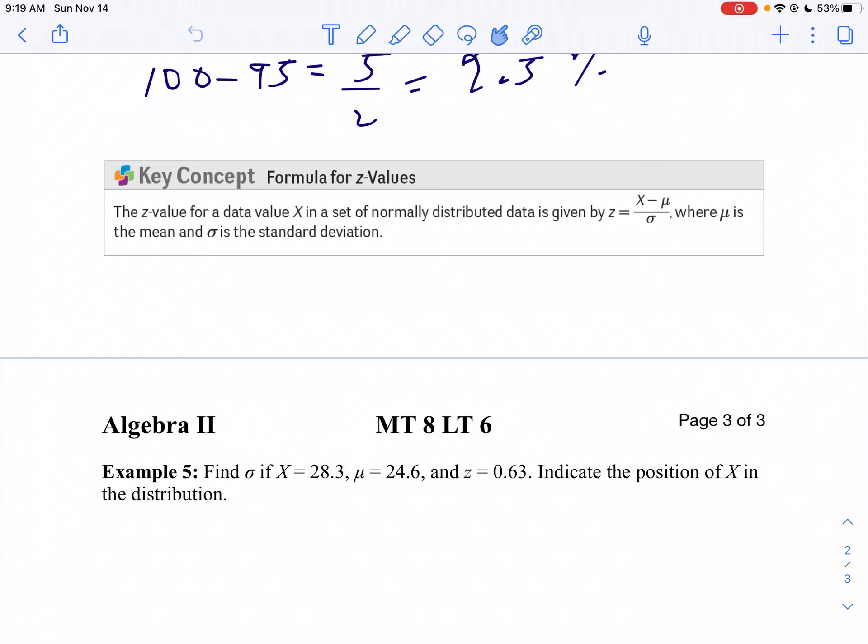The z-value or the standardized score lets us compare different distributions with different means and different standard deviations so we can look at them relatively within our normal distribution. Our z-score has a formula.